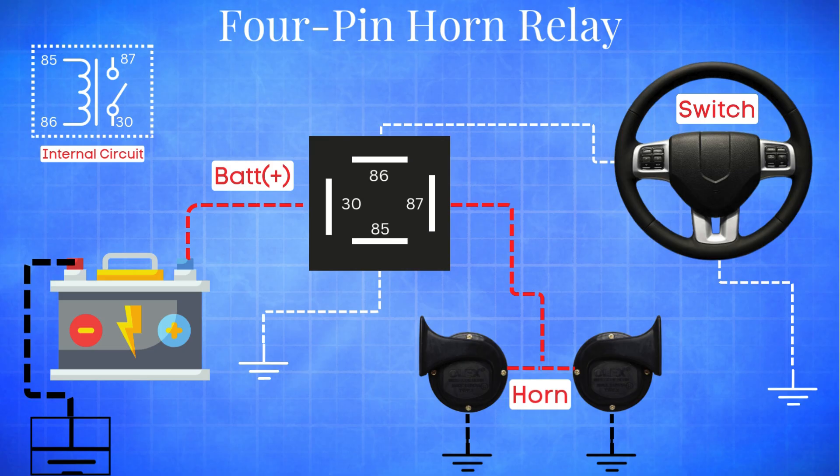Now, when you press the horn, a small current flows through the coil between pins 85 and 86. This creates an electromagnetic field that pulls a switch inside the relay. That internal switch then closes the connection between pin 30 and pin 87.